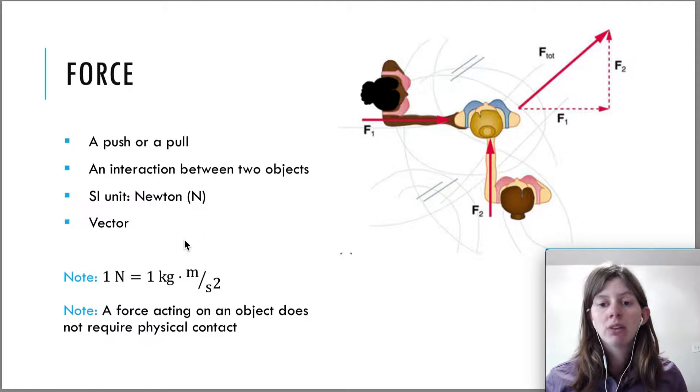The unit of one Newton is also equal to one kilogram times meters per second squared. We're going to understand this a little bit better once we get to talking about Newton's second law.